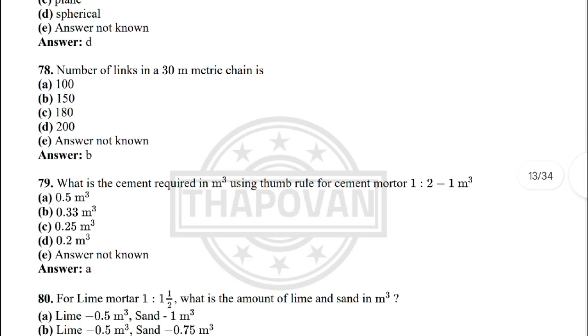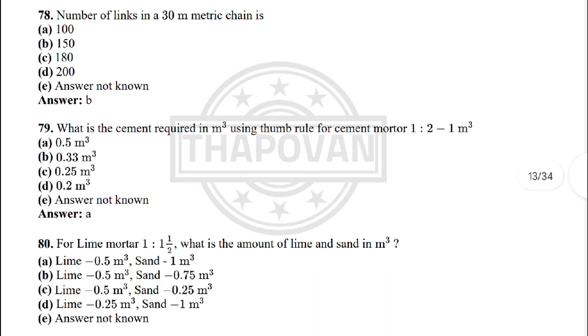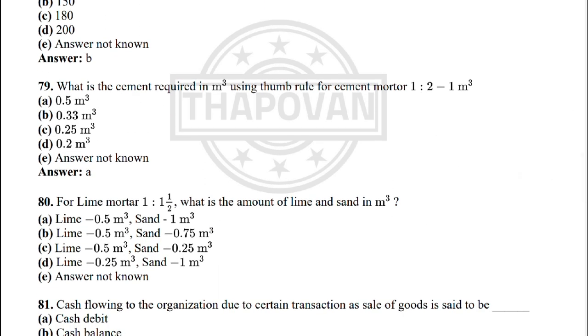Next: in geodetic surveying the earth's surface is taken as — the correct answer is option D: spherical. Next: the number of links in a 30-metre chain is — the correct answer is option B: 150.